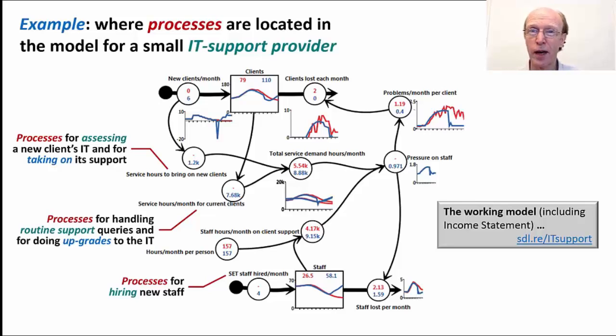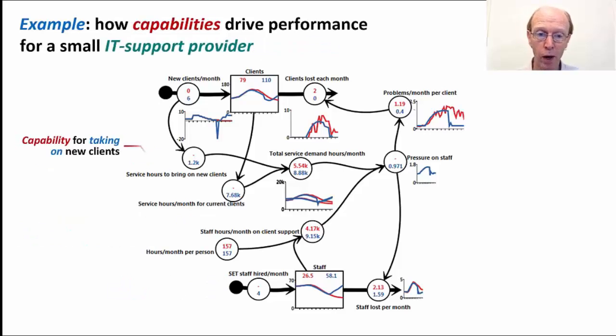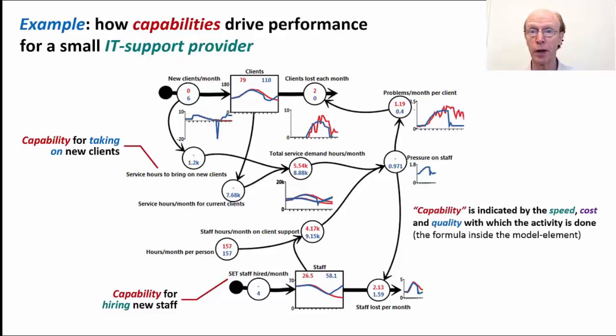Now let's move on and have a look at where capabilities fit. Well, it's not actually very complicated because capability is how good the organization is at doing something. So what are the things that this organization needs to be good at doing? Well, no surprise, it needs to be good at taking on new clients. It needs to have a strong capability of that. It needs to have a strong capability for hiring new staff.